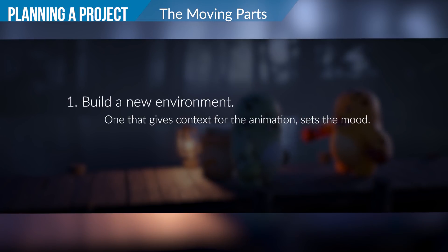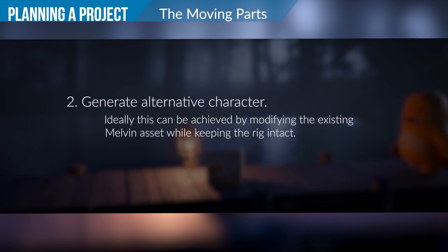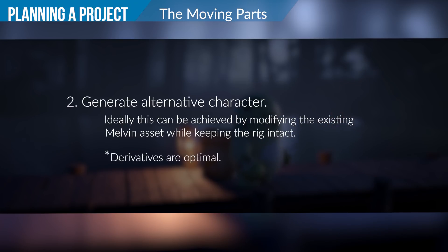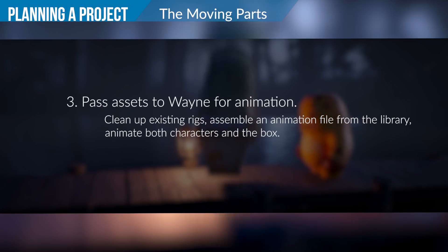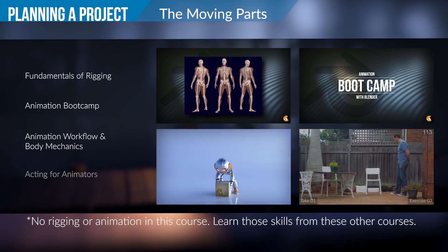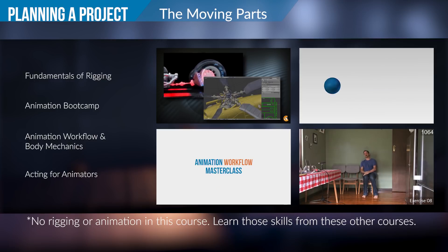Now let's break down that scenario into its moving parts. For one, we're going to need a brand new environment that sets the stage for the animation to take place — it needs to be spooky, and my mind goes straight to a forest at night. I also need to derive an alternate version of our character. We already have Melvin rigged from the previous micro short, and a derivative of that asset is optimal. I should be able to generate new textures and even add some minor geometric details while maintaining the existing rig. With those new assets created, I can pass them off to Wayne for any additional rigging and animation.